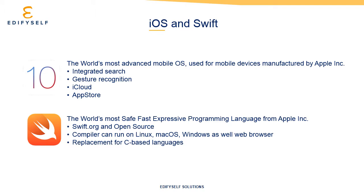Swift is intended as a replacement for C-based languages — C, C++, and Objective-C — by comparing its performance with other languages for most tasks. The performance must also be predictable and consistent.